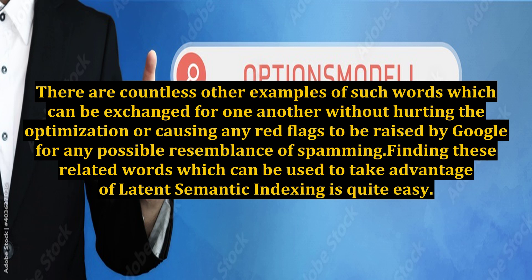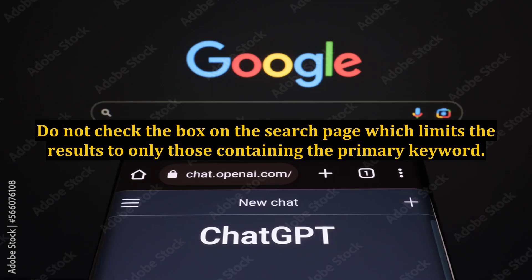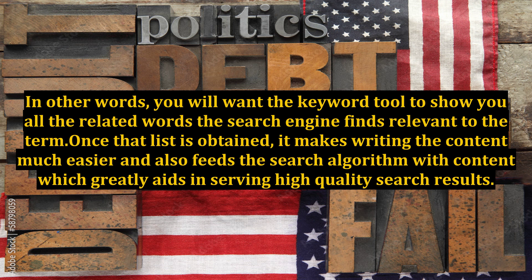Finding these related words which can be used to take advantage of latent semantic indexing is quite easy. Simply go to the free Google keyword tool, often called the external tool, and search the preferred keyword which will be optimized for. Do not check the box on the search page which limits the results to only those containing the primary keyword. You will want the keyword tool to show you all the related words the search engine finds relevant to the term. Once that list is obtained, it makes writing the content much easier and also feeds the search algorithm with content which greatly aids in serving high-quality search results.